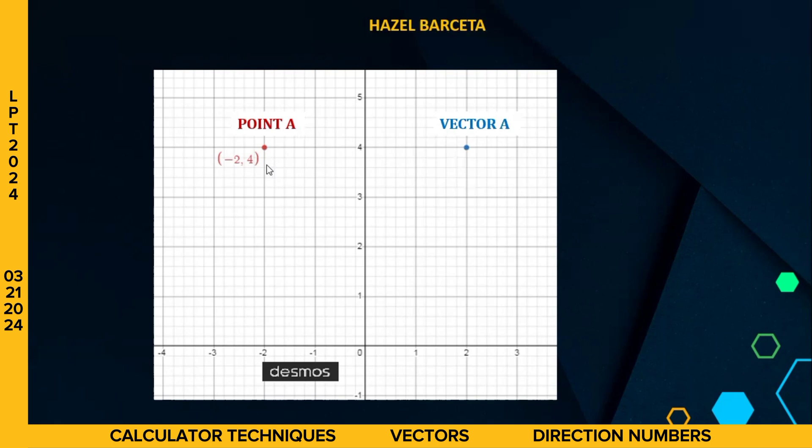So we have x and y-axis para mas madali po natin ma-visualize at magkaroon po tayo ng idea kung ano po ang pagkakaiba ng point at vector. So here, we have point A and vector A. So paano po ba natin malalaman na point po pala ang isa at ang isa ay vector? By inspection, we have 2, 4 as coordinates of our vector A. So we will write it like this one, in equalities instead of parentheses. So ayan, hindi na po siya pareho sa kanyang coordinates. Again, paano po ba malalaman na vector maliban sa ganyan? Vector po kapag merong magnitude and merong direction. Kasi po ang ating scalar quantity ay meron lang po magnitude. Whereas, vector quantity, we have magnitude and direction.